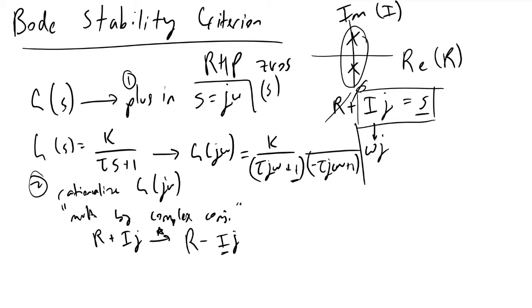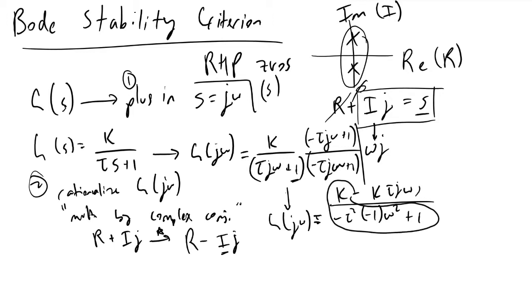When we multiply this out, G of J omega equals minus tau squared times minus one times omega squared plus one in our denominator, and K minus K times tau J omega in our numerator. We can see the real part here as well as the imaginary part. The point is, at the end of the day, we have broken up G into some real part plus some imaginary part I times J.